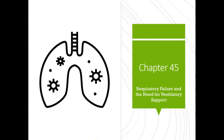Hi everybody, welcome back. This is going to be the first of two parts of lectures on Chapter 45 in your Egan's 12th edition. This material is going to cover respiratory failure and the need for ventilatory support. I felt like this was a good chapter to start us off in life support because in this course, you're going to be learning a lot about mechanical ventilation. This chapter really covers and helps you understand the indicators of the need for mechanical ventilation.